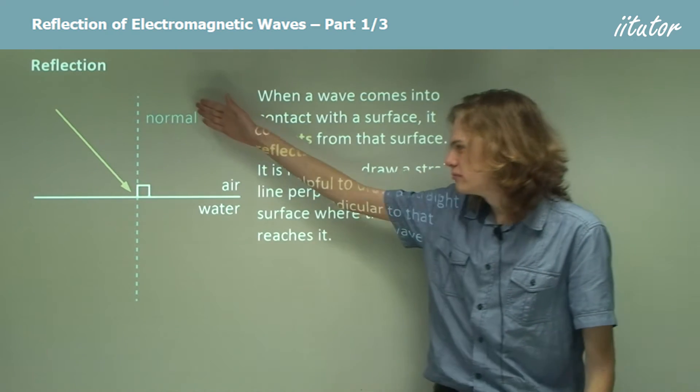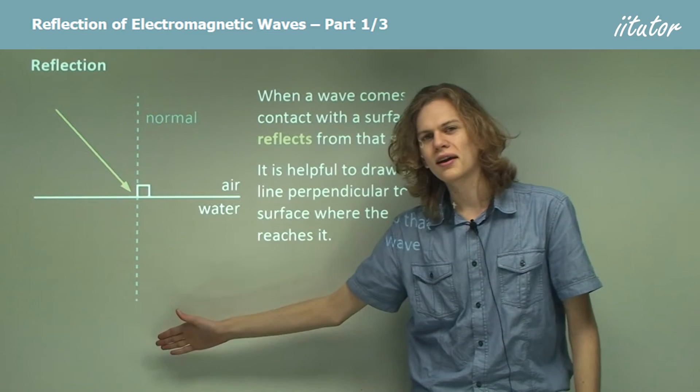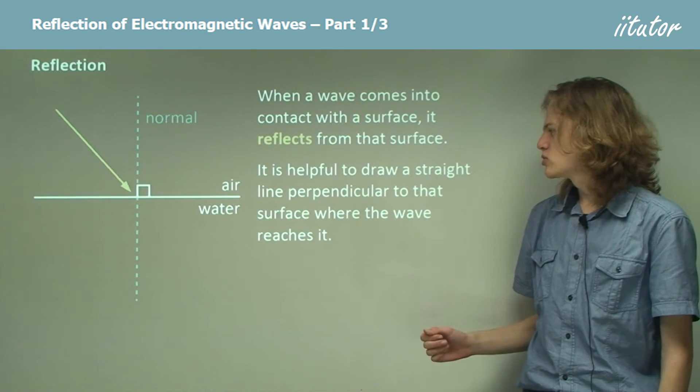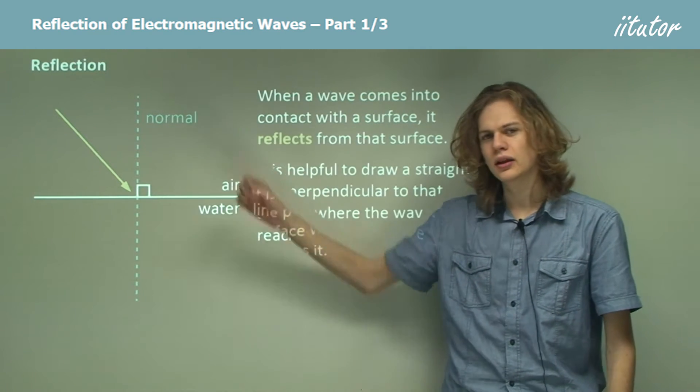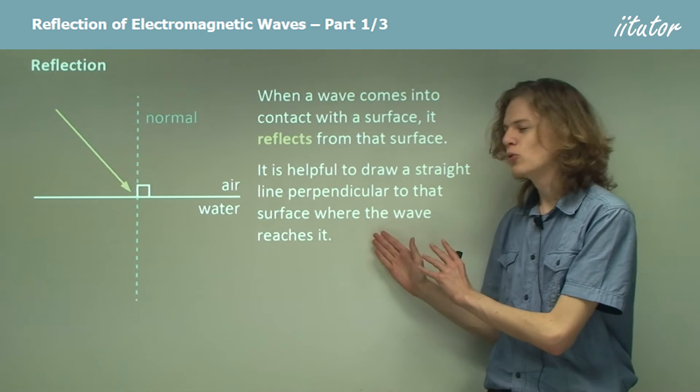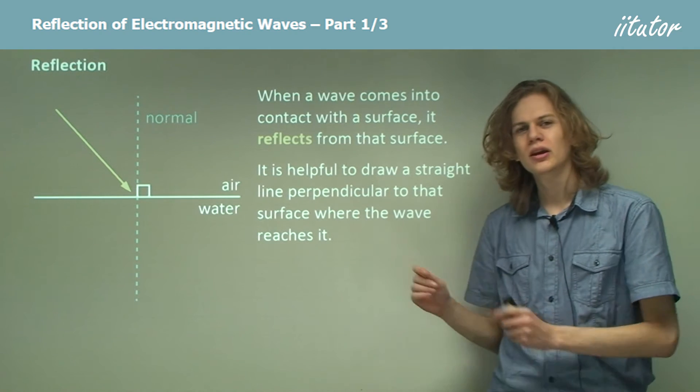As we can see, we've got an odd little perpendicular line here. This is called the normal, and it turns out that it's quite helpful to have this line.